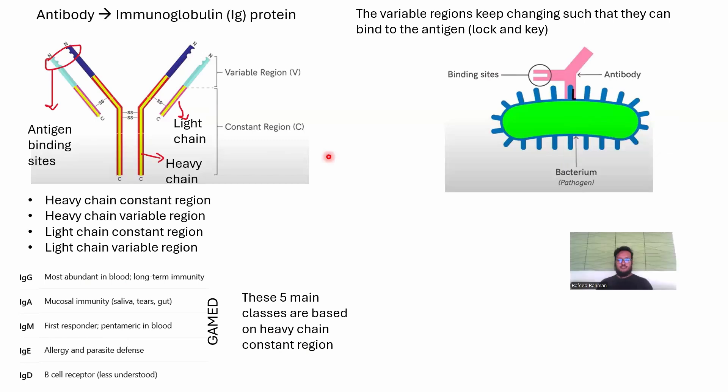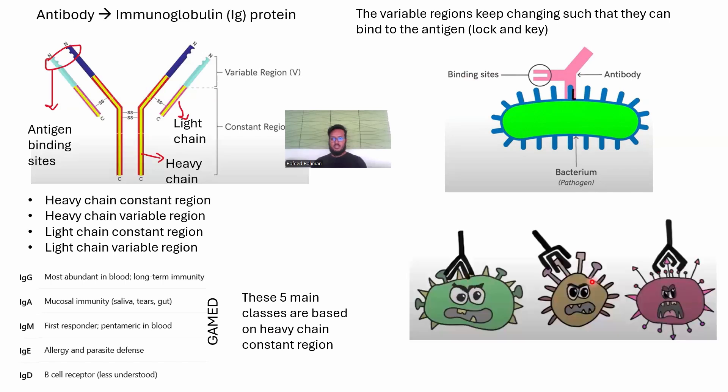The variable region on top keeps changing so they can bind to antigen. If this is a pathogen, these spikes are the antigens. The antibody binds with these antigens. It's a lock and key type of approach. As you can see, different pathogens have different types of antigens and they require different types of antibodies. This antibody will not be able to lock right here, so the immune response will not work unless you have this type of antibody.